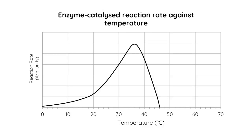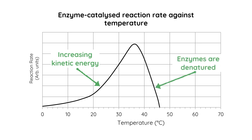We can see that as the temperature increases, the rate of an enzyme-catalyzed reaction will initially increase. The reason is that there is an increase in kinetic energy, meaning all of the molecules are going to be moving around at an increasing rate, which means there are going to be more successful collisions between the active site and the substrate. However, once the temperature gets too high, the enzymes will become denatured, and then we have this sharp drop in reaction rate.